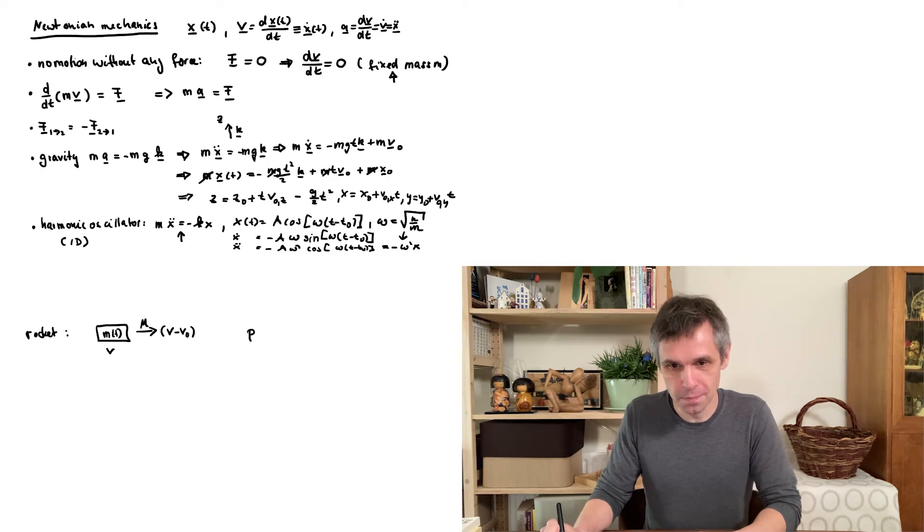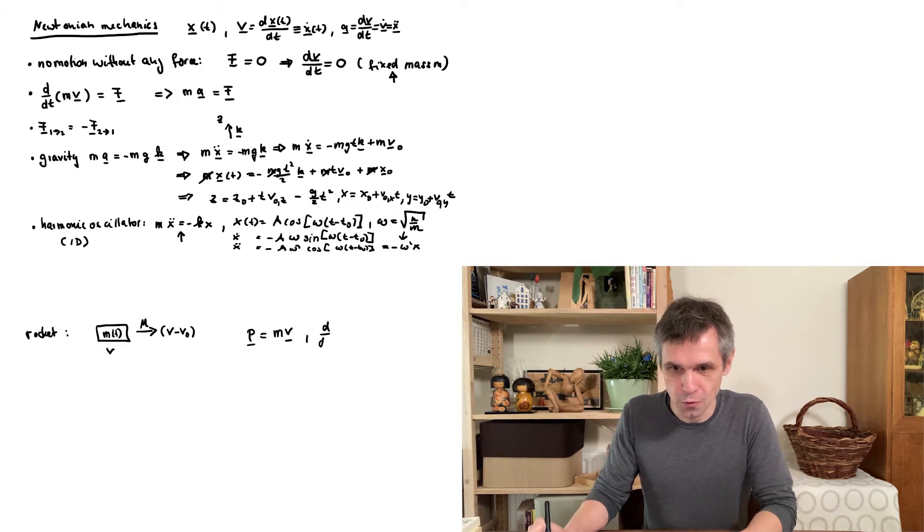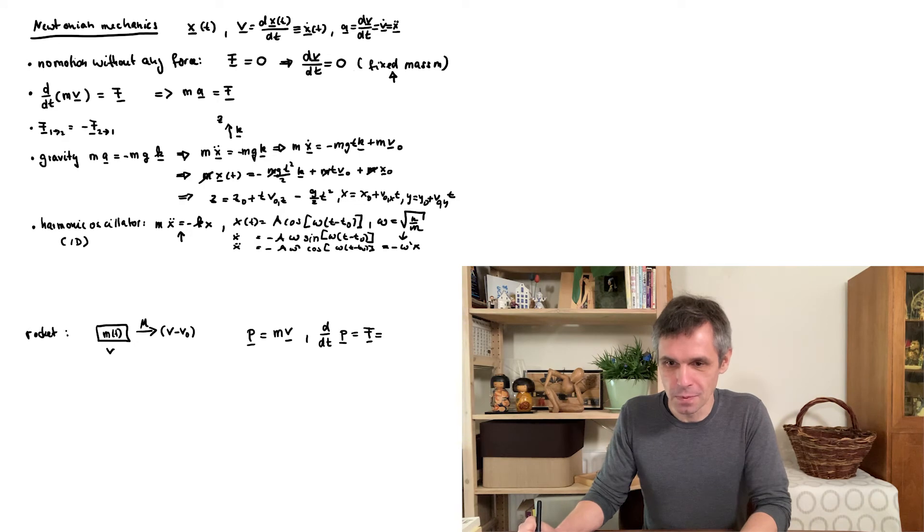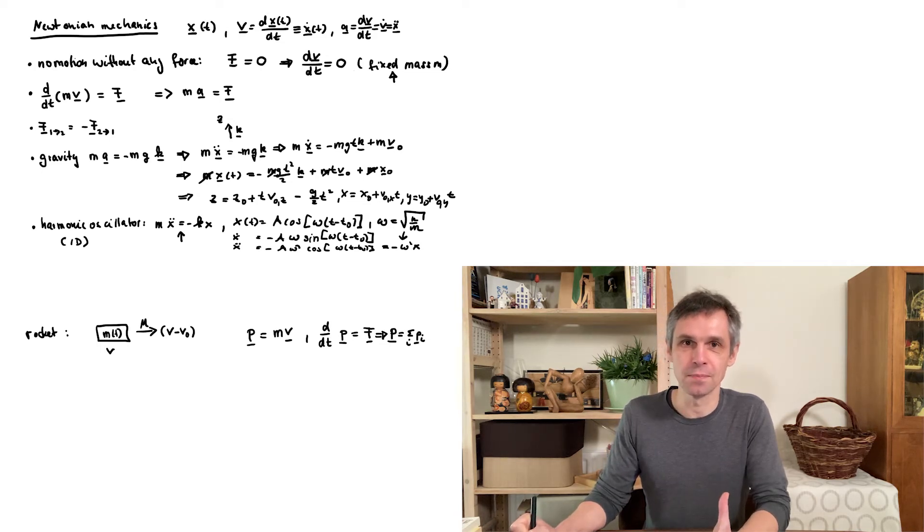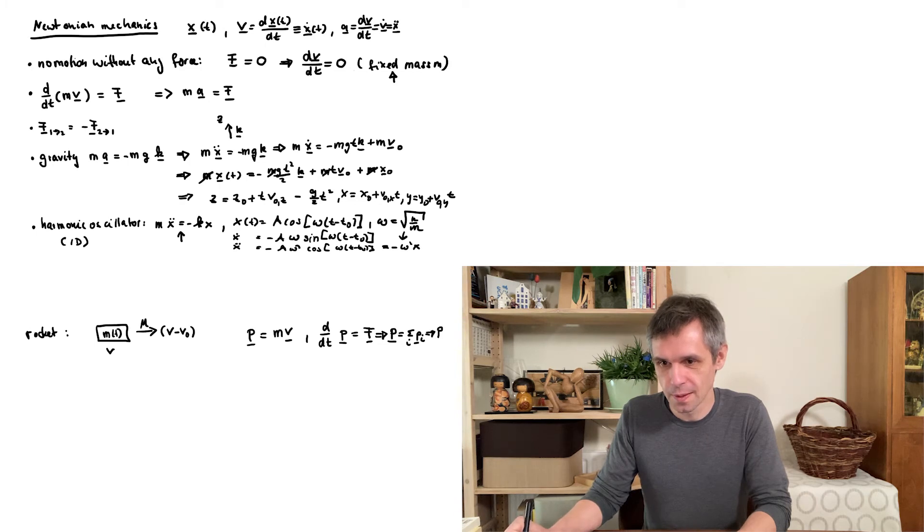So introduce momentum p. And then Newton's equation of motion for any part of the system can just be written like this. And if we then add up all the momenta into a momentum capital P and use the third law that all the forces interacting between the different parts are sort of canceling each other, and we don't have any forces from the outside, then this total momentum will be conserved.